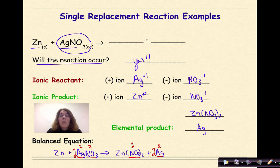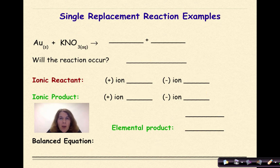And then finally we look at our zinc. We have one zinc on the product side, one zinc on the reactant side, and we can see that it is now balanced. Let's look at another example.